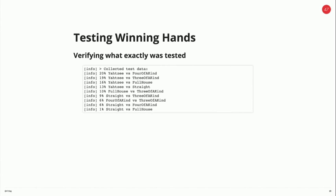When we run the test, it looks something like this: we can see Yahtzee was run against four of a kind 20% of the time, all the way down to a straight beating a full house. If you remember the ranking of the hands from earlier, the ones on the left always beat the ones on the right — so our test was doing what we expected. Just one other thing to notice: there's actually one pairing that didn't get run on this test, and that was full house against four of a kind. If you run the test again, chances are it will happen. If you continually run these tests, these permutations happen, and eventually all the tests you'd expect will be covered.